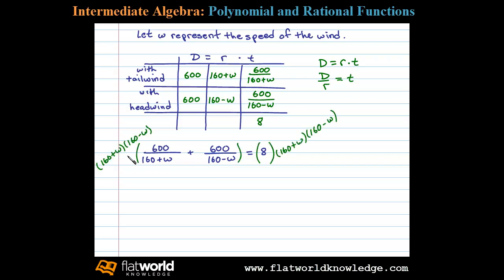Now here we can see that multiplying by the LCD requires us to apply the distributive property here on the left side. For this first term, the 160 plus W will cancel and we'll be left with 600 times 160 minus W. Now multiplying times the second term, we can see the 160 minus W will cancel, and that'll leave us with plus 600 times 160 plus W. On the right, nothing cancels, and so we have this.